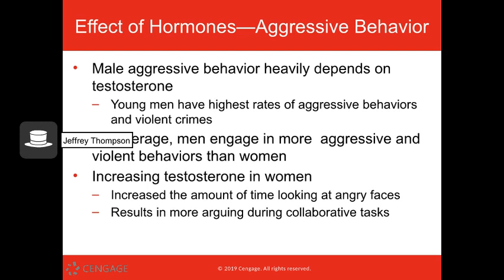Surprise, surprise — male aggressive behavior depends on testosterone. Young men have the highest rates of aggressive behaviors and violent crimes. On average, men engage in more aggressive and violent behaviors than women — meaning physical aggression and intimidation. Usually in these studies we're talking about those types of aggression, not relational aggression, which we often see as more typical of women in Western society. Relational aggression relies on social strength: gossiping, putting people down socially, ostracizing and excluding people from events.